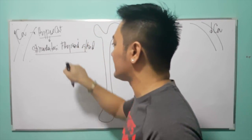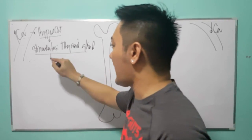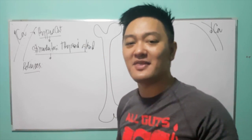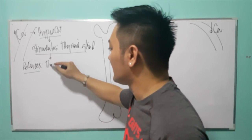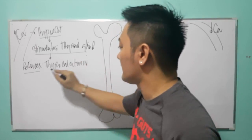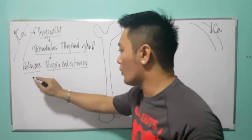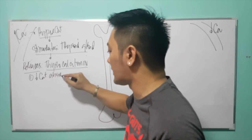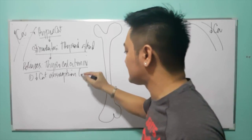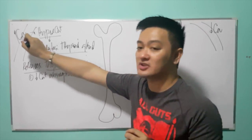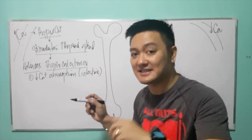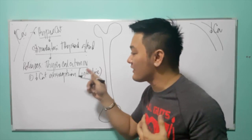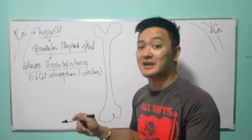What are the effects of thyrocalcitonin? Number one: thyrocalcitonin decreases calcium absorption in the intestine. Because there is too much calcium in the blood, thyrocalcitonin tells the intestine to decrease calcium absorption. That is one effect of thyrocalcitonin.